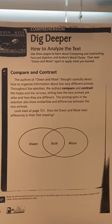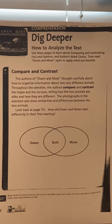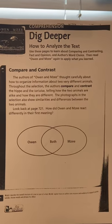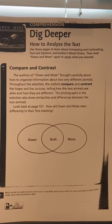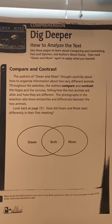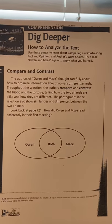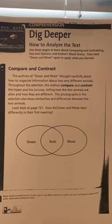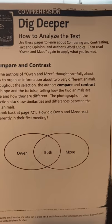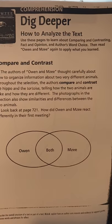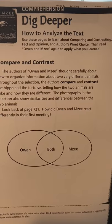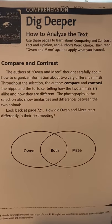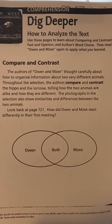Then you're going to read Owen and Mosaic again to apply what you know. You're going to do a Venn diagram in a few minutes between Owen and Mosaic. The authors of Owen and Mosaic thought carefully about how to organize information about two very different animals. Throughout the selection, the authors compare and contrast the hippo and the tortoise, telling how the two animals are alike and how they're different.